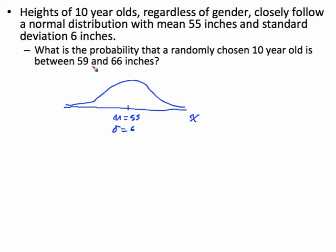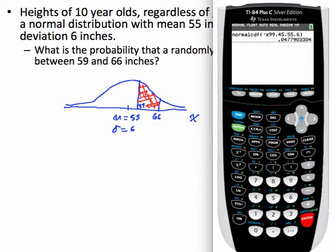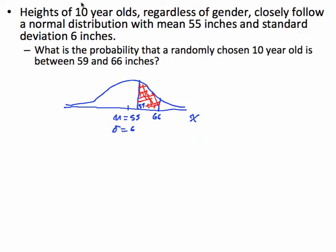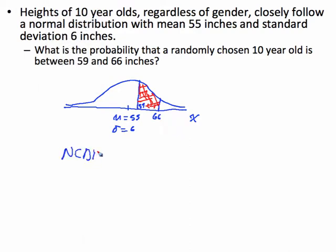We want to know between 59 and 66 inches. Since the mean is 55, 59 is about here and 66 is about there on the axis. We want the area trapped between those values. Finding that area means using normalCDF. The left endpoint is 59, the right endpoint is 66, the mean is 55, and the standard deviation is 6.